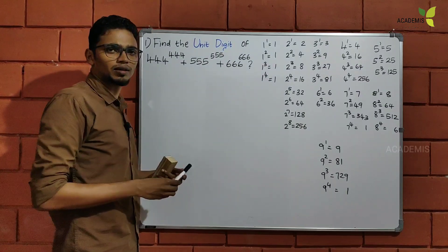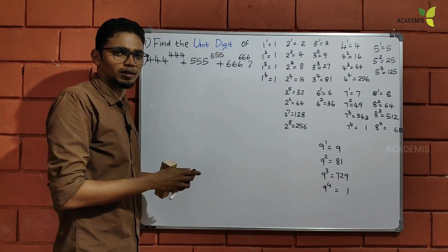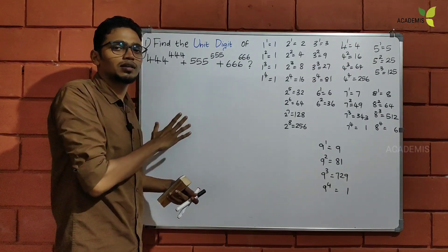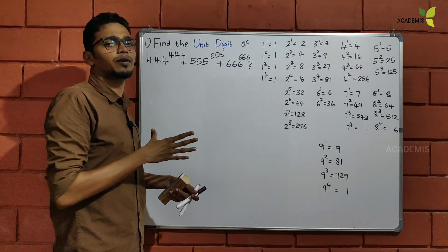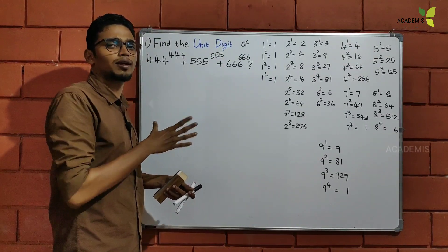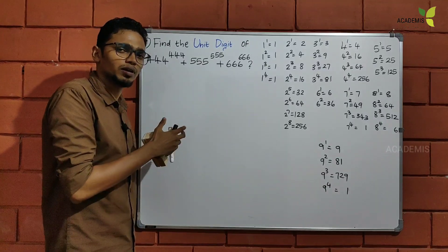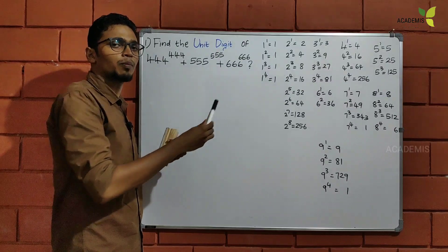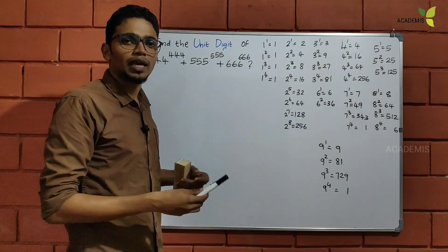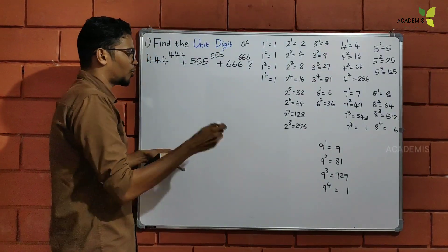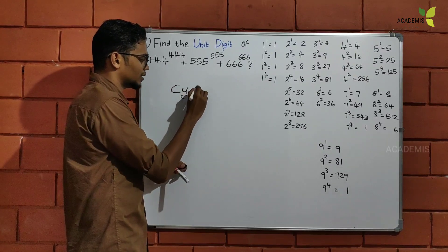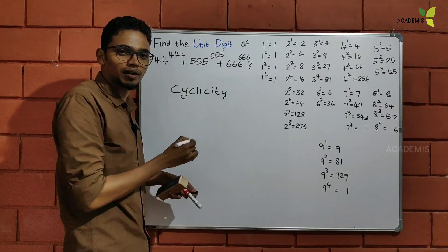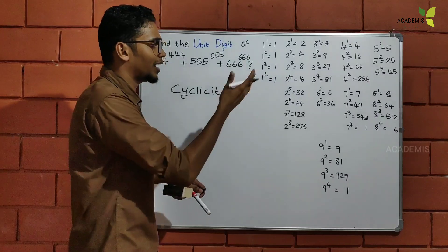I will guarantee you that in this video, I will show you how to answer this question. How are we going to solve that? We will try to solve the problem with numbers using a property. The name of the property is Cyclicity. We will try to work it out.